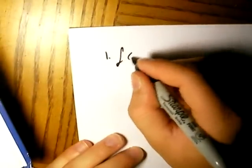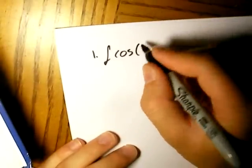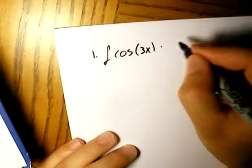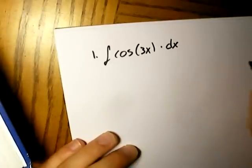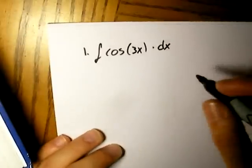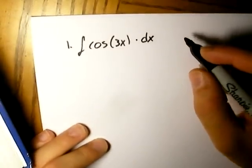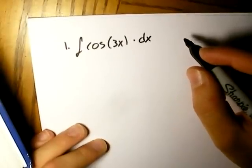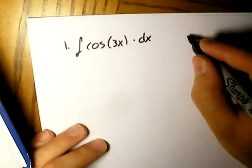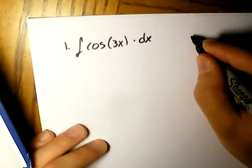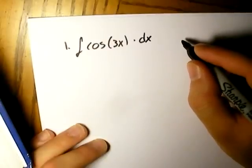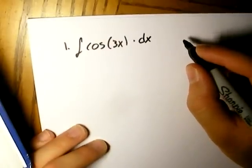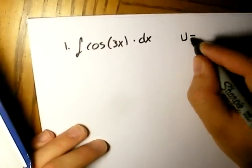The integral of cosine 3x times dx. And basically here, what I'm going to introduce to you is my own little method of using what I call a u-substitution table. I don't know where I got it from, if I made it up or if anything. I've never seen any teacher do it before, and most teachers don't teach it this way, but it's the way that makes most sense.